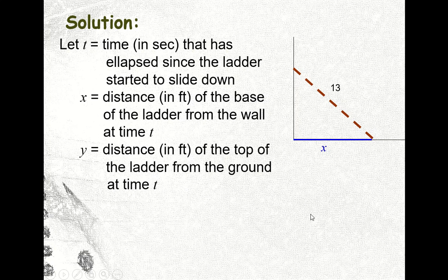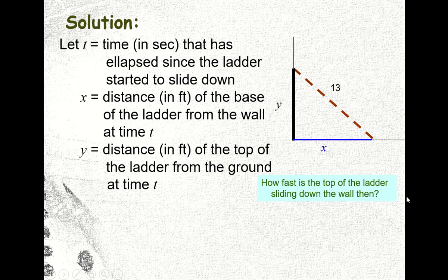Then we let y be the distance in feet of the top of the ladder from the ground at time t. So this is our y — the distance of the top of the ladder from the ground. The question now is: how fast is the top of the ladder sliding down the wall? So as the base slides, the top also slides down.